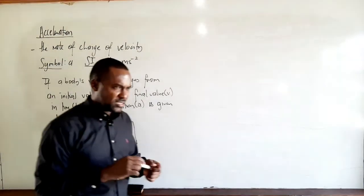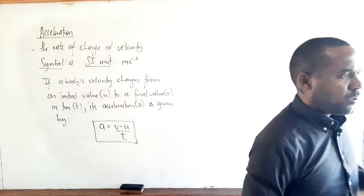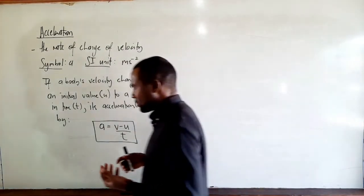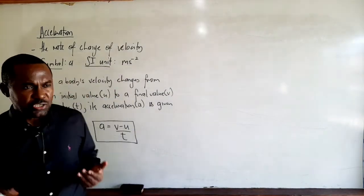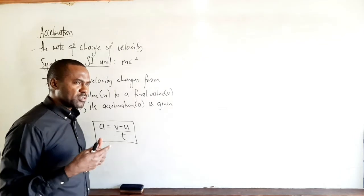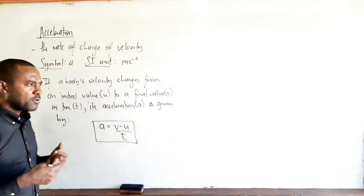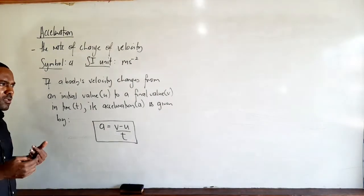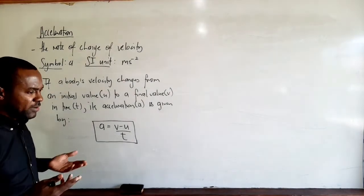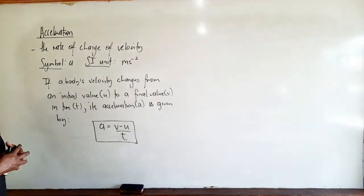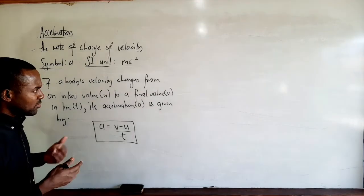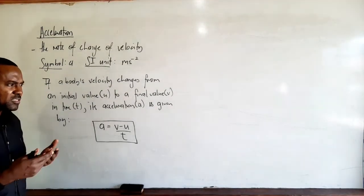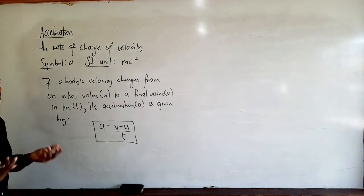In defining acceleration we defined it as the rate of change of velocity. Acceleration is a vector quantity, really defined in terms of velocity. Speed is simply velocity with no concern for direction. If a body's direction is not changing, its speed equals the magnitude of its velocity.